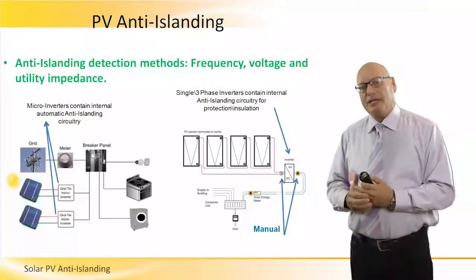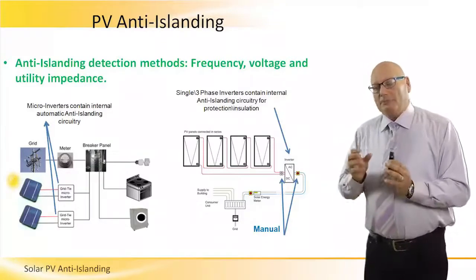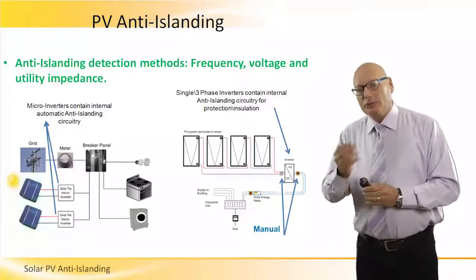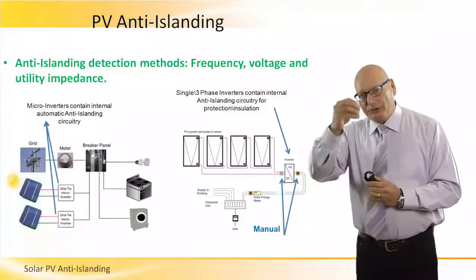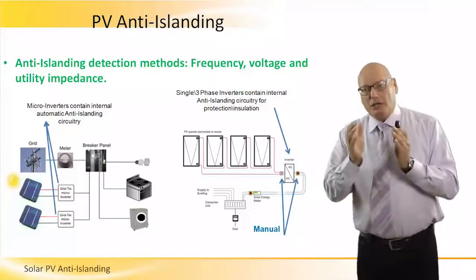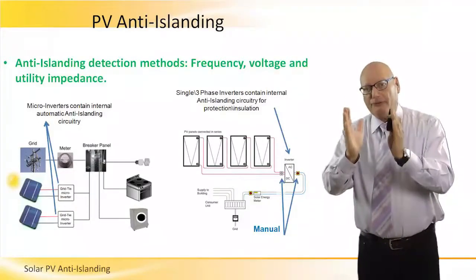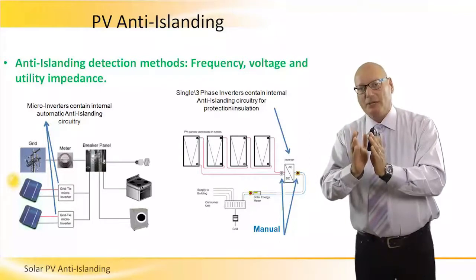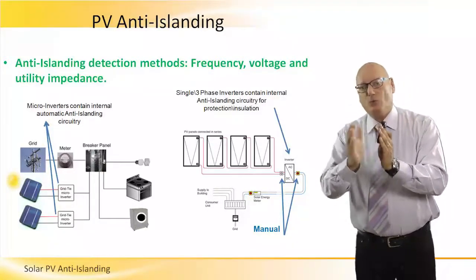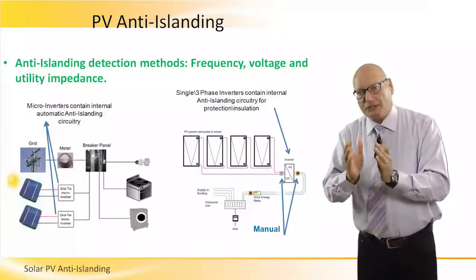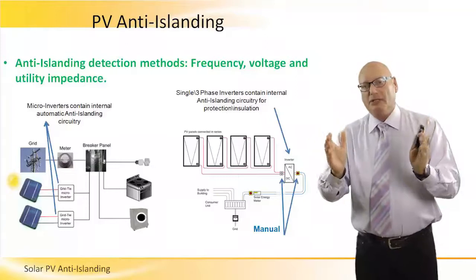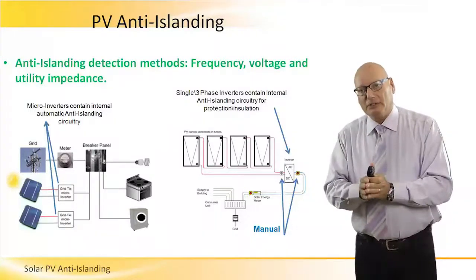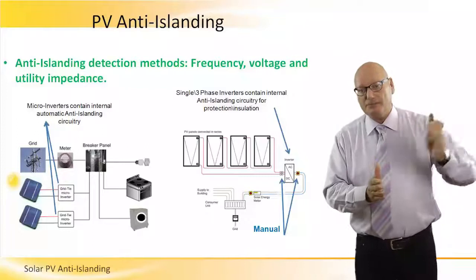The anti-islanding mechanism looks at three parameters: frequency, voltage, and utility impedance. This mechanism resides within the inverter and monitors the frequency of the grid — it must be within a very close tolerance. For example, in a 50 Hz system, the tolerance would be plus or minus one hertz. If the frequency of the grid goes beyond these tolerance levels, the anti-islanding circuitry will automatically cut and split the grid from the PV system.